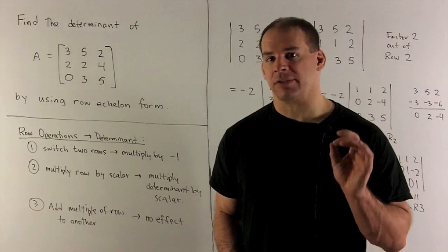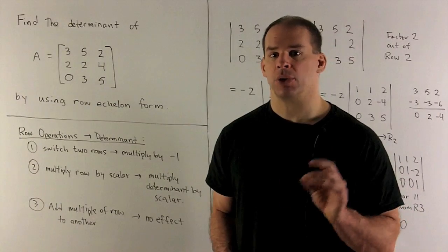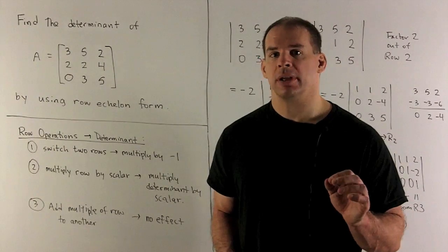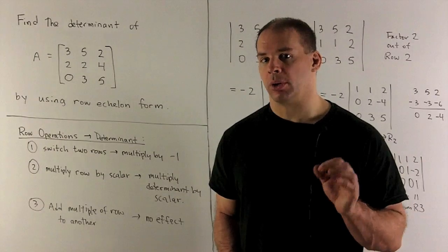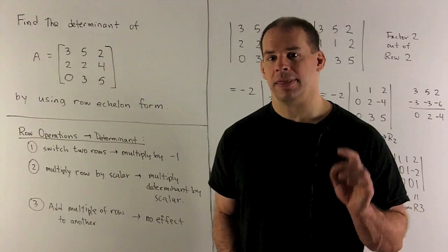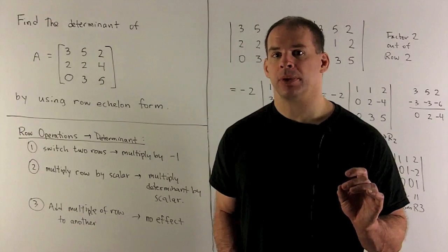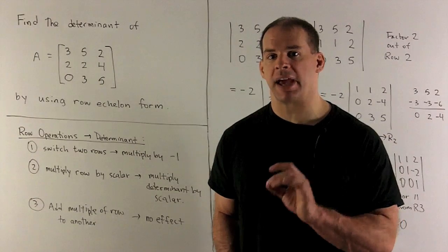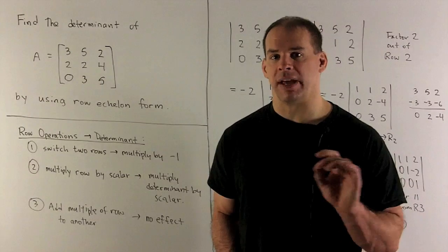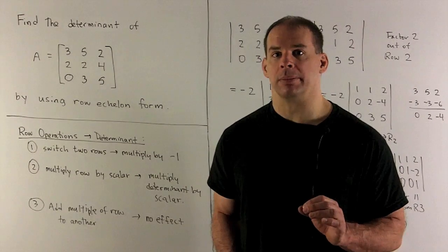Let's review the effect of our row operations on the determinant. We have three row operations. First, if I switch any two rows, we multiply the determinant by minus one. Then, if I multiply any row by a scalar, we multiply the determinant by that same scalar. And finally, if I take a multiple of any row and add it to another row, there is no effect on the determinant.